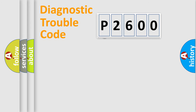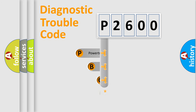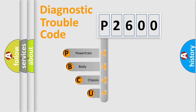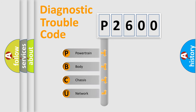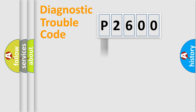First, let's look at the history of diagnostic fault code composition according to the OBD2 protocol, which is unified for all automakers since 2000. We divide the electric system of an automobile into four basic units: Powertrain, Body, Chassis, and Network. This distribution is defined in the first character of the code.